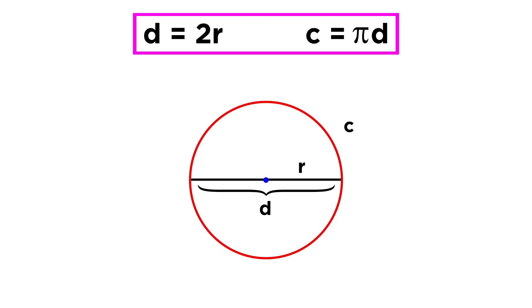So the equations we need to know are as follows: d = 2r, and c = πd, or in terms of r, c = 2πr, since one d is two r's.